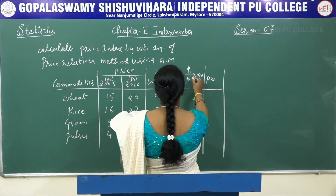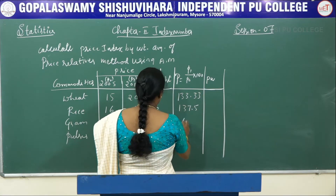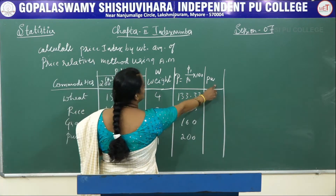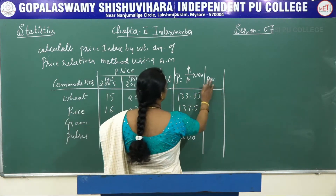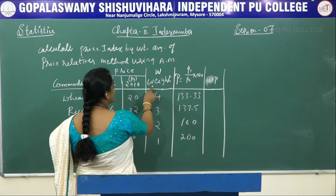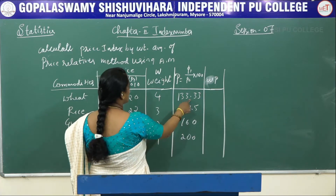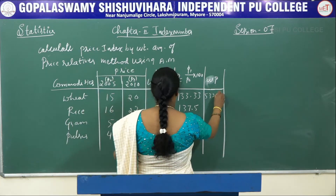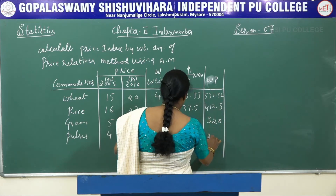The P1 by P0 values are 137.5, 160, and 200. Next, PW — that is price relative multiplied with weight, or we can write it as W into P also. This weight column should be multiplied by the price relative column. That is 4 into 133.33, and similarly we get all the values: 533.32, 412.5, 320, and 200.